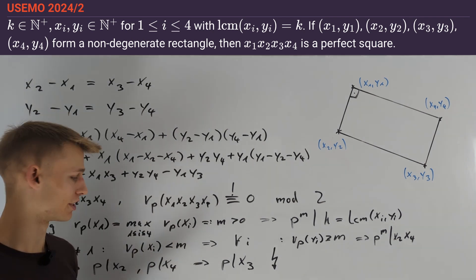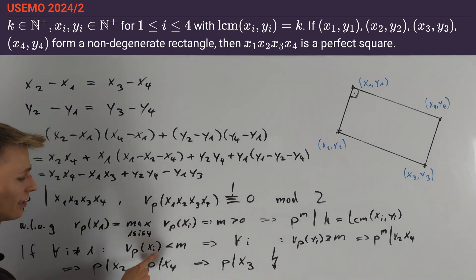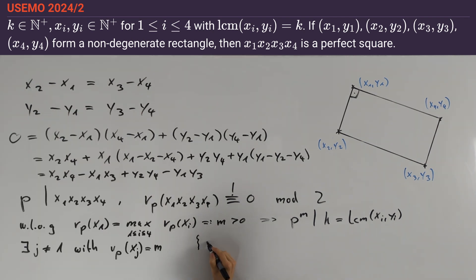Thus it is left to consider the case that we find an i such that nu_p(xi) ≥ m. Since we assumed nu_p(x1) is maximal, we know that nu_p(xi) = m. Let us denote the remaining indices by a and b, so the set equals {2, 3, 4} without j.